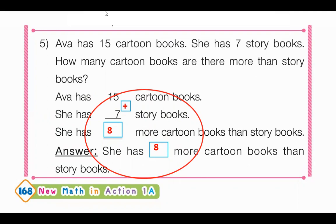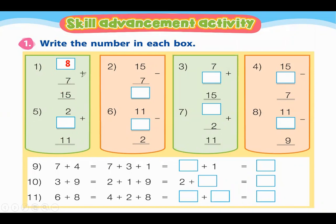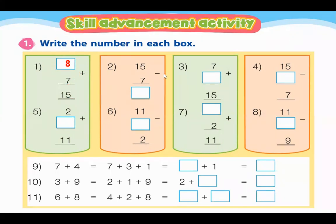Now let's go to the next page. Write the number in each box. Example number 1: 8 plus 7 equals 15. You have to find a number that, when added to 7, gives a result of 15. If you add 8 and 7, the result is 15.